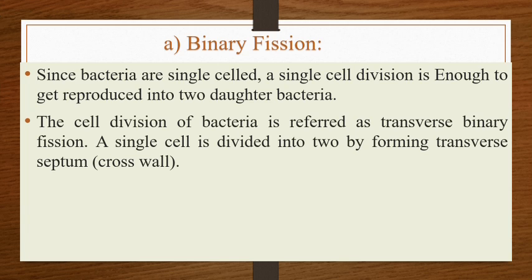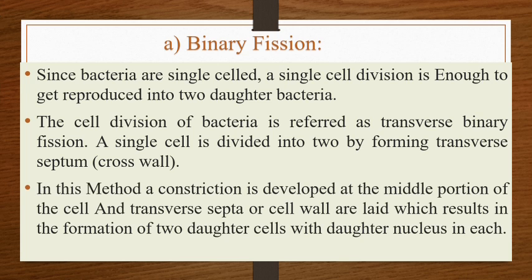In binary fission, a single cell is divided into two by forming a transverse septum, also called a cross wall. A concentric constriction is developed at the middle portion of the cell, and a transverse septum or cell wall is laid, resulting in the formation of two daughter cells, each with a nucleus.